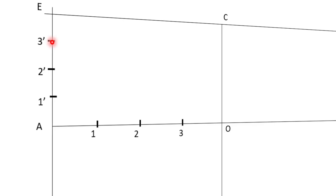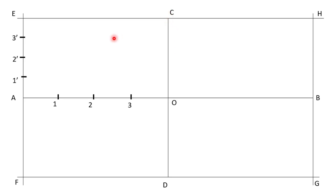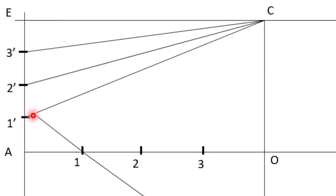Now, to remember the next step: we are going to connect these points with the point opposite to them. The point opposite to 1', 2', 3' is C, and the point opposite to 1, 2, 3 is D. So we will draw lines from C passing through points 1', 2', 3' — that is lines C1', C2', and C3'. Similarly, we connect D with point 1 and extend it so that it intersects line C1', naming that intersection point P1.